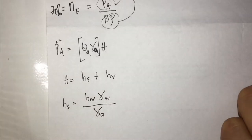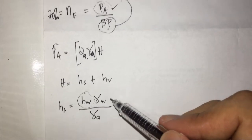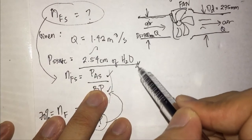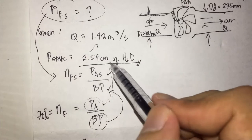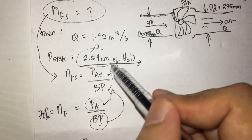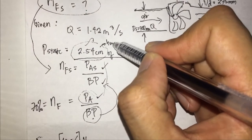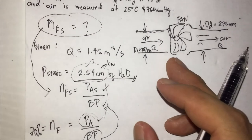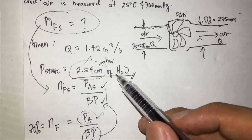Where do we get the head of water? When you have a given static pressure stated as 2.54 cm of water, that value — 2.54 — is already the static head in water (H_W). There's only one static pressure given (no separate suction or discharge values), so we use that alone.